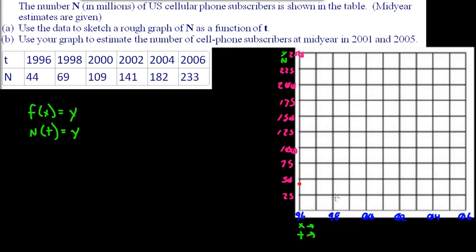And 1998, you're going to have 69, so it's going to be about right in here. And 2000, you're going to have 109. You know 100, between 100 and 125 is 25, half of that is 12.5, and we're trying to get at 109, so it's going to be right under the 50% mark, right about here.